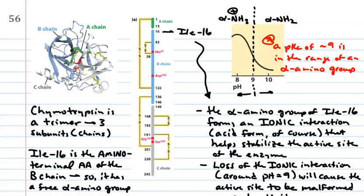Chymotrypsin is a trimer. It has three subunits, chains. It has an A-chain, a B-chain, and a C-chain trimer. Isoleucine-16. I know, why is number 16 at the very, why is amino acid number 16 the first amino acid of the B-chain? Well, because they're numbering all the amino acids in order.